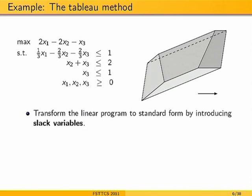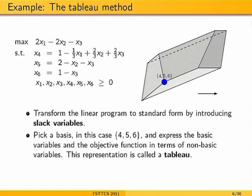A quick example: given an LP, you first put it in standard form by introducing slack variables X4, X5, X6. Starting with basis {4,5,6} means setting X1, X2, X3 to zero. Writing the equality constraints makes it easy to read off X4=1, X5=2, X6=1. Looking at the objective function in a maximization problem, the coefficient of X1 is 2, so increasing X1 improves the objective. You increase X1 until X4 becomes 0, stopping at that point to get a new basis.